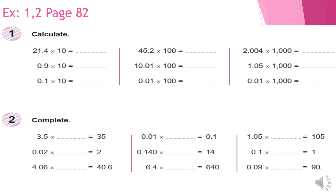In exercise number one, let's start with the first row. 21.4 times 10 — we move the point one step to the right side and get 214.0. This trailing zero is unnecessary and I can cross it. The second one: 0.9 times 10 — we move the point one step to the right side and get 9.0; that zero is also unnecessary. The last one: 0.1 times 10 — move the point one step to the right side, it will be 1.0, and that zero is unnecessary.